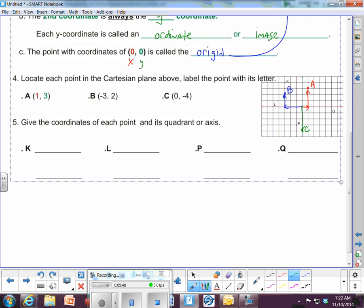So five, give the coordinates of each point and its quadrant or axis. If you'll notice by the format up above, every one of my sets of coordinates are in parentheses. Don't forget the parentheses. The coordinates of points go in parentheses.